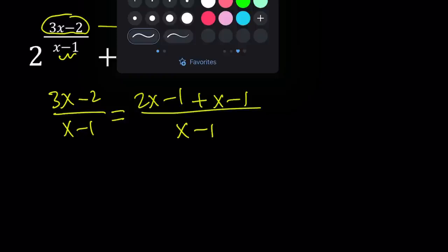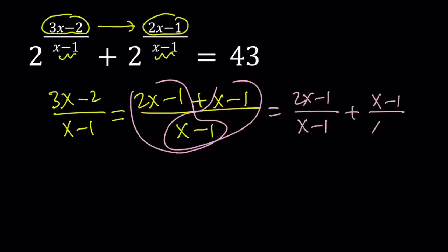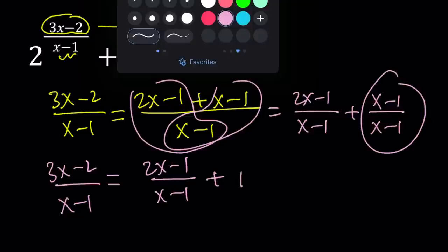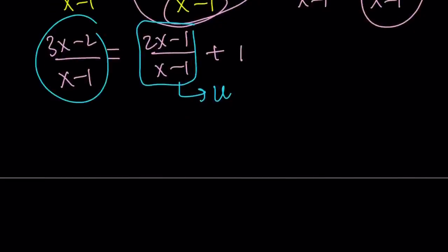We can separate these into two fractions and write this as 2x minus 1 over x minus 1 plus x minus 1 over x minus 1. The second fraction is 1, so this becomes 2x minus 1 over x minus 1 plus 1, which equals 3x minus 2 over x minus 1. One thing to be careful about: x does not equal 1, so that's outside the domain — that's actually going to be our vertical asymptote. This helps us greatly because we can use substitution. If we call 2x minus 1 over x minus 1 as u, then 3x minus 2 over x minus 1 becomes u plus 1.